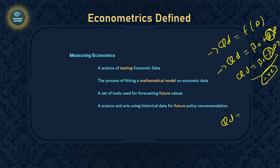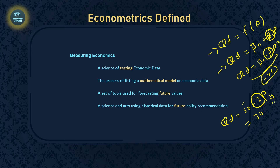The third form is the completely numerical form, where we also know the magnitude. For example: QD = 50 − 2P. This means that if price increases by one rupee, quantity demanded decreases by two units. We can also predict quantity demanded at a given price — if price is 10 rupees, then 50 − (2×10) = 50 − 20 = 30, so quantity demanded will be 30. This form gives us much more detail than the other two.